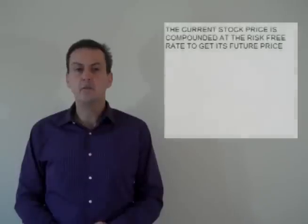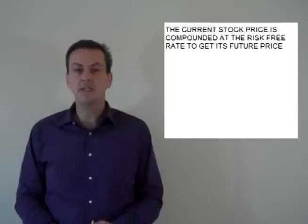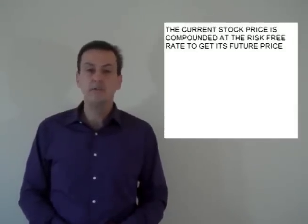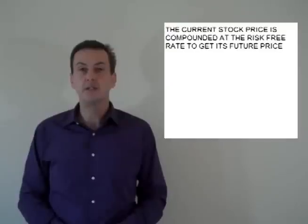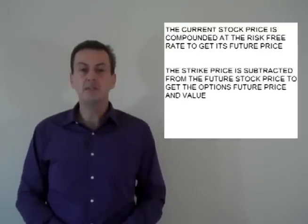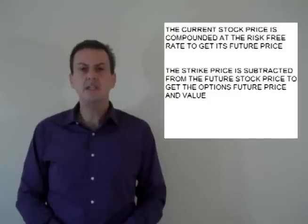Let's look at this again in more detail. The no riskless arbitrage argument shows us that with the risk removed, the stock will increase in price at the risk-free rate. Therefore, we take today's stock price and continuously compound it at the risk-free rate to find out what the stock price will be in the future when the option expires. We then subtract the option strike price to get the option's future intrinsic value. Again, this is not today's value — it is the option's value at expiration.